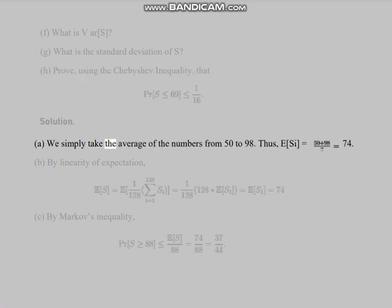Part (a): We simply take the average of the numbers from 50 to 98. Thus, E(S_i) equals 74. Part (b): By linearity of expectation, E(S) = 128 × 74. Part (c): By Markov's inequality, we obtain the bound.